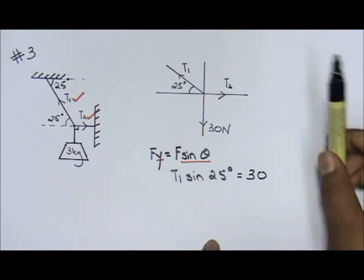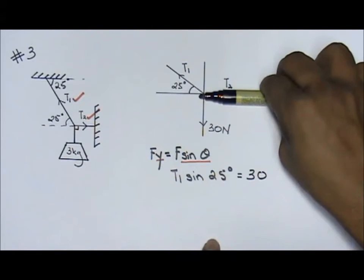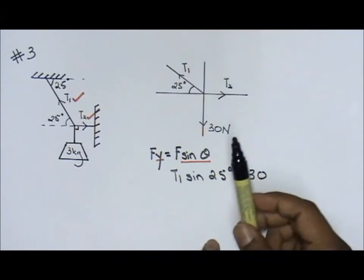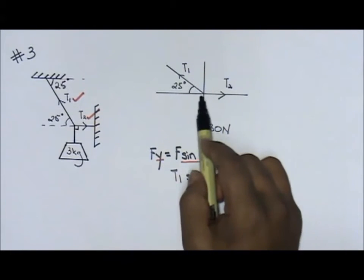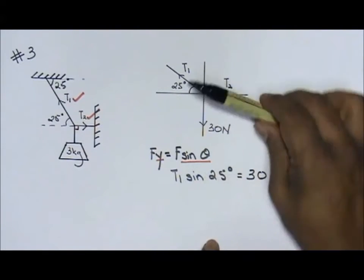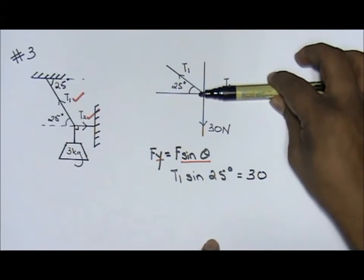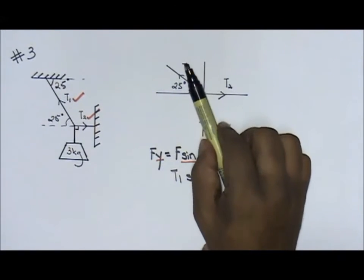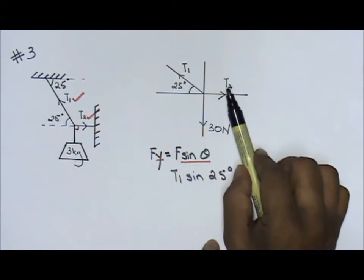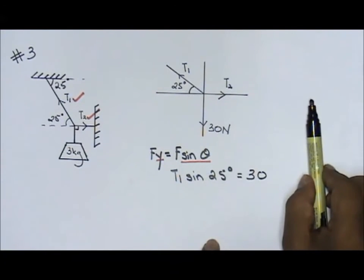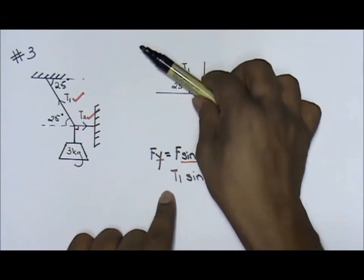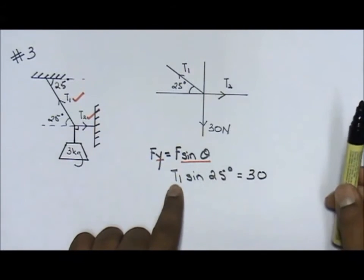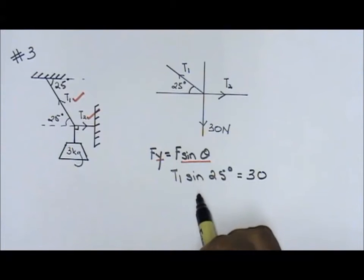Some students, they do ask me, sir, why not T2, I bring it to Fy? I can't do that, guys, because T2 is already in the x-axis. So, I can't do anything. It is already a value at the x-axis. So, the only thing that can move to Fx and Fy is T1, because it has an angle. This one, no angle. It's 90 degrees. It's fixed to the Fx. Now, so again, T1, you bring it to Fy, it will be T1 sine 25 equals to 30.